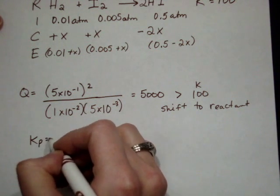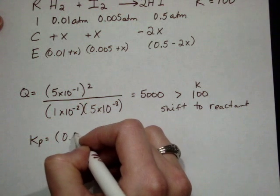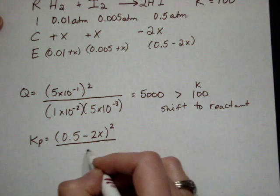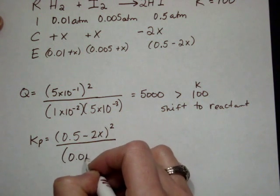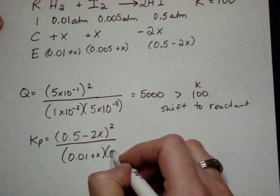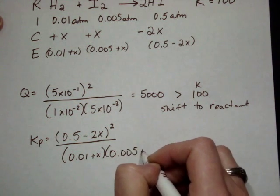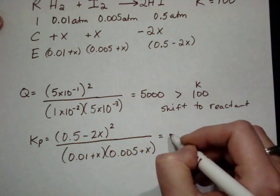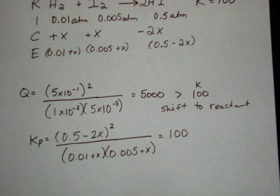I have to use my K expression and go at it again. So, Kp is what we're really technically working with here. 0.5 minus 2x squared for the HI, 0.01 plus x and 0.005 plus x for the H2 and the I2. And that has to be equal to 100. We actually do have to go through and solve this thing using the quadratic equation.